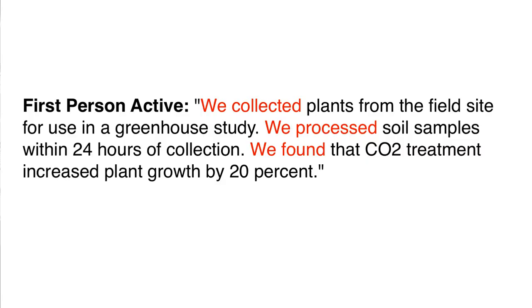Use first-person active voice sparingly, however, because it puts the focus on the researcher and what they were doing instead of the science. A lot of sentences written this way becomes repetitive. Use of passive voice may be preferable in the description of methods. Look at papers in your target journal to see how they use passive and active voice and follow their example.